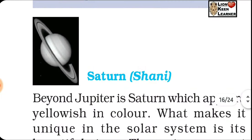Uranus and Neptune are the outermost planets of the solar system. They can be seen only with the help of a large telescope. Like Venus, Uranus also rotates from east to west. The most remarkable feature of Uranus is that it has a highly tilted rotational axis — approximately 90 degrees. Uranus's diameter is 50,800 km, distance from sun is 2870×10⁶ km, and it completes one revolution in 84 years.